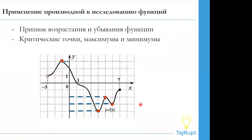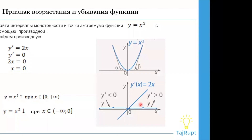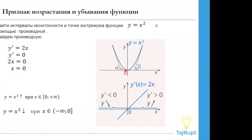Тогда перейдем дальше. Следующий — это признак возрастания и убывания функции. Мы уже знаем, что такое возрастание и убывание, и с помощью производной мы можем найти интервалы монотонности, точки x максимума. Интервалы монотонности — это то же самое, что и промежутки возрастания и убывания. Давайте изучим это на простом примере: y равно x квадрат, опять же парабола.